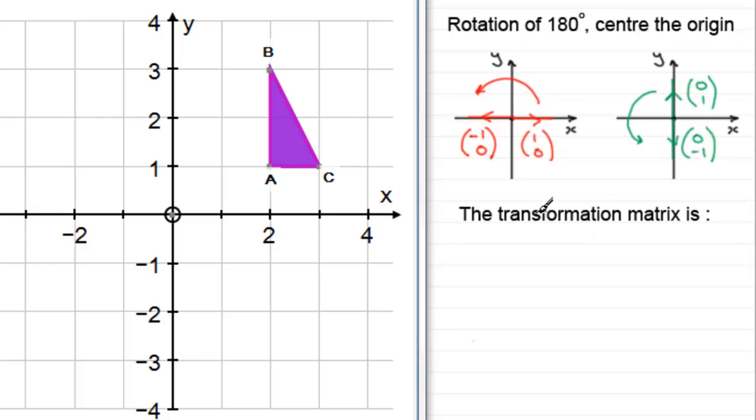And to form that transformation matrix then, all we do is we take each of the results of these two vectors in turn. 1, 0 went to minus 1, 0, so minus 1, 0 goes there. 0, 1 went to 0 minus 1, so that result goes there. And so that is our transformation matrix which would transform any shape, not just this one, any shape, 180 degrees, centre the origin.